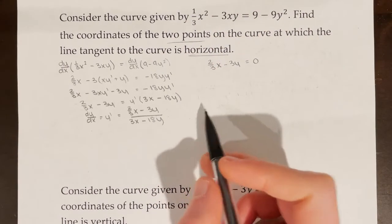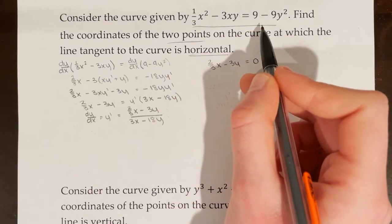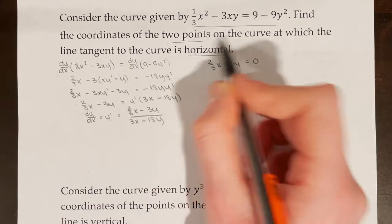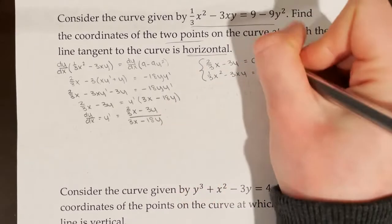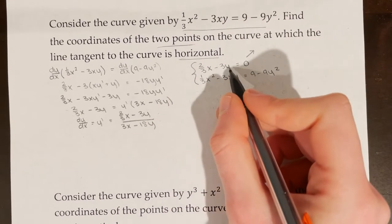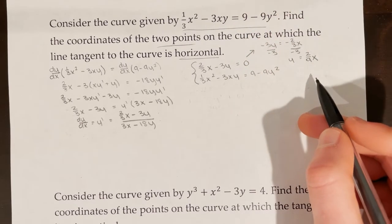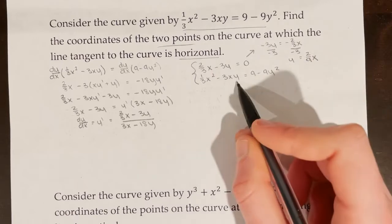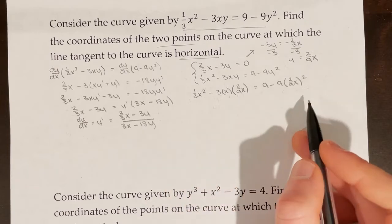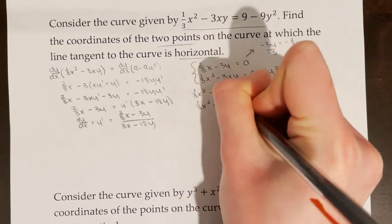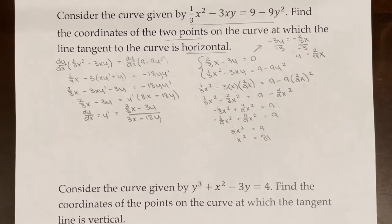Now we make our system of equations: one from the numerator equals zero condition, and the other is the original equation, since the point must both make a horizontal tangent line and lie on the curve. Solving by substitution, I solve for y and get y = (2/9)x. Plugging that into the other equation and simplifying, I get x² = 81.